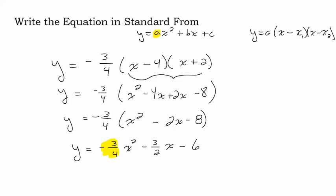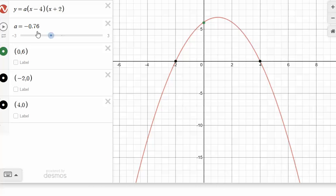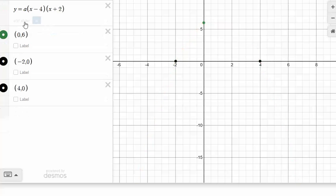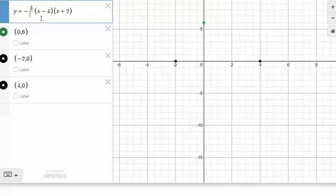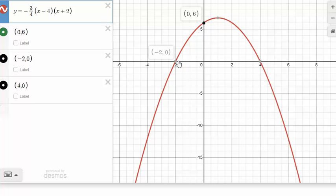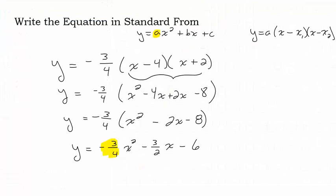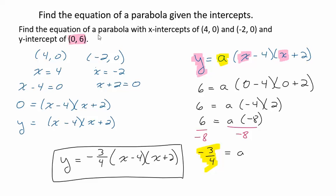Let's take a look at that graph before we wrap this up. We estimated -0.76. That was pretty close. 3/4 is 0.75. We had -3/4. So let's get rid of that. Let's put this in here and put -3/4 in there. Boom, we got it. There's our y intercept. There's our two x intercepts. Nailed it. All right, hope that helps you find the equation of a parabola given the intercepts.